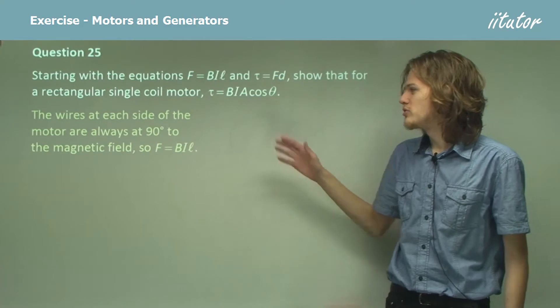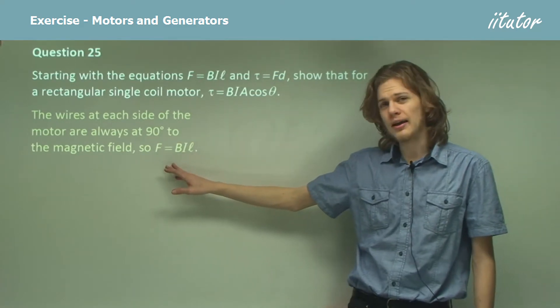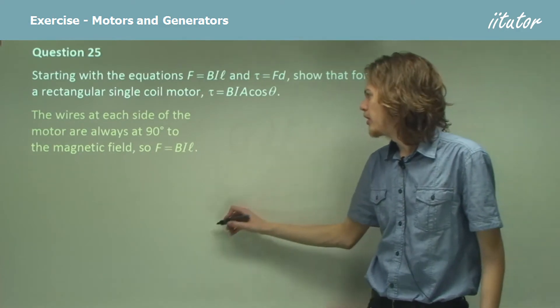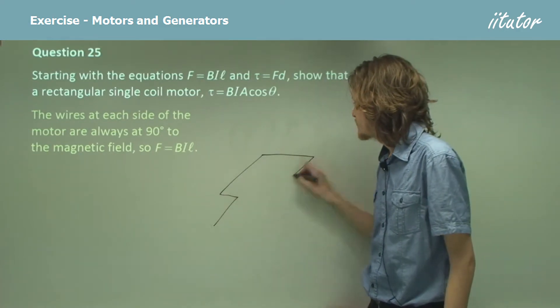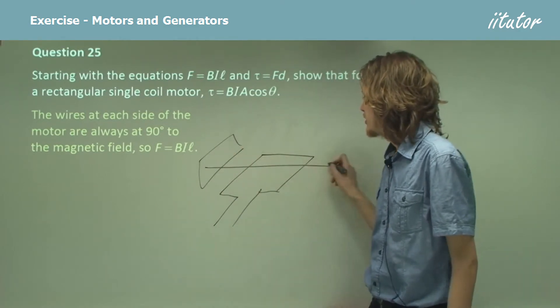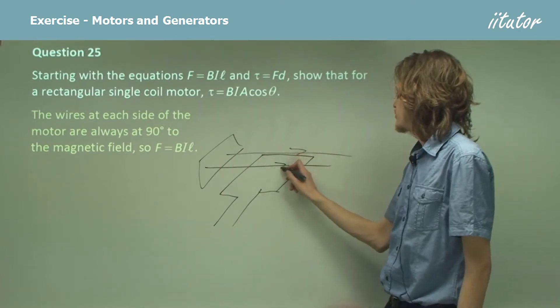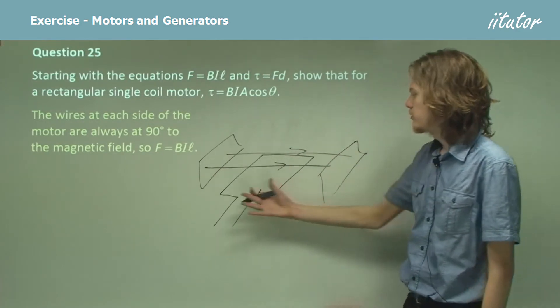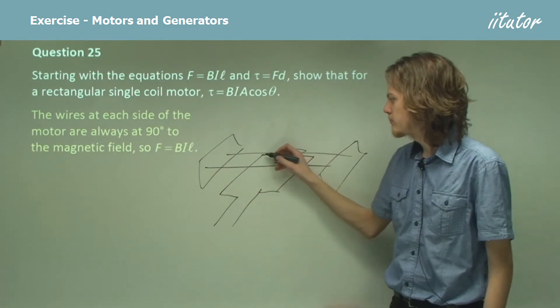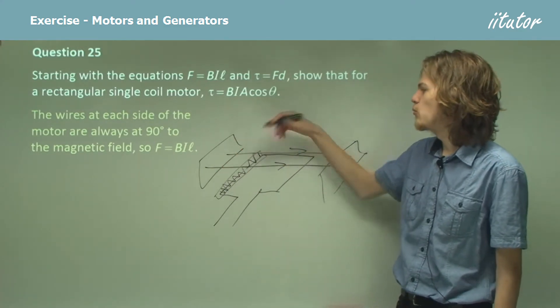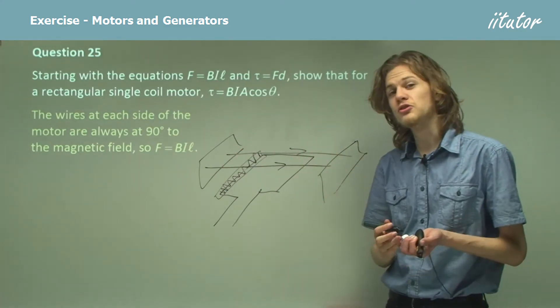So the wires at each side of the motor are always 90 degrees, so we have F equals BIL. If we think of exactly what a motor looks like, we can see that no matter how it's rotated, it'll always be perpendicular to the magnetic field lines. At least this part here will be. This is really the part that we're worried about here, because it's what experiences the force.